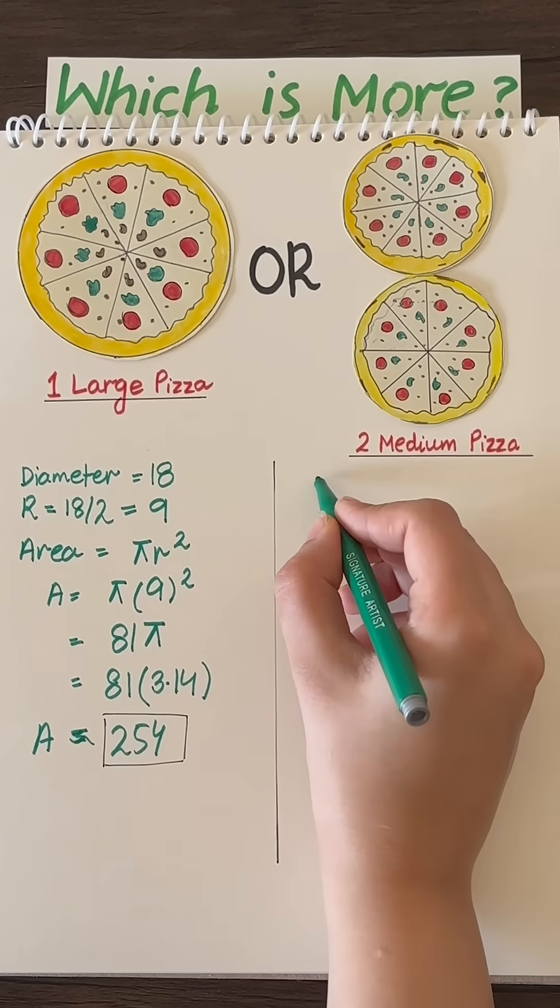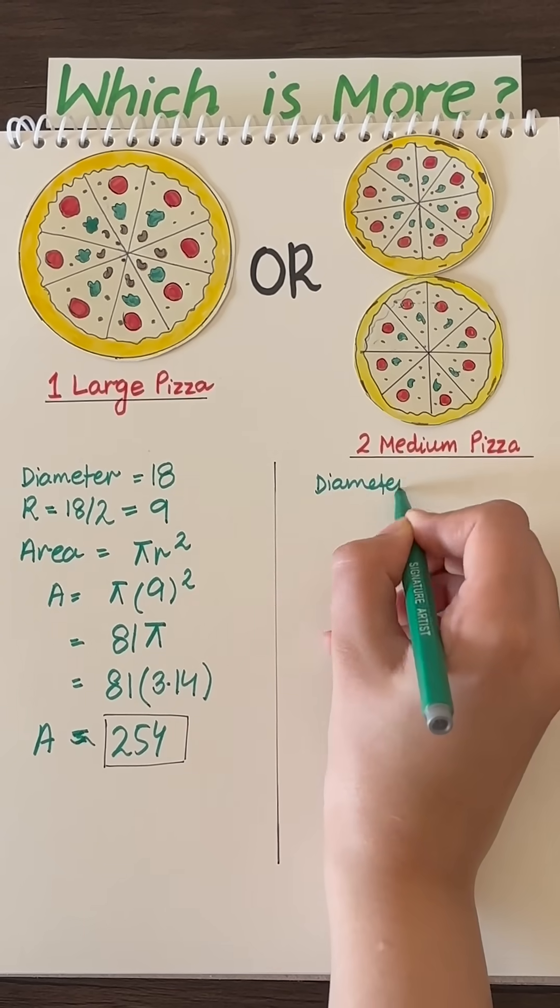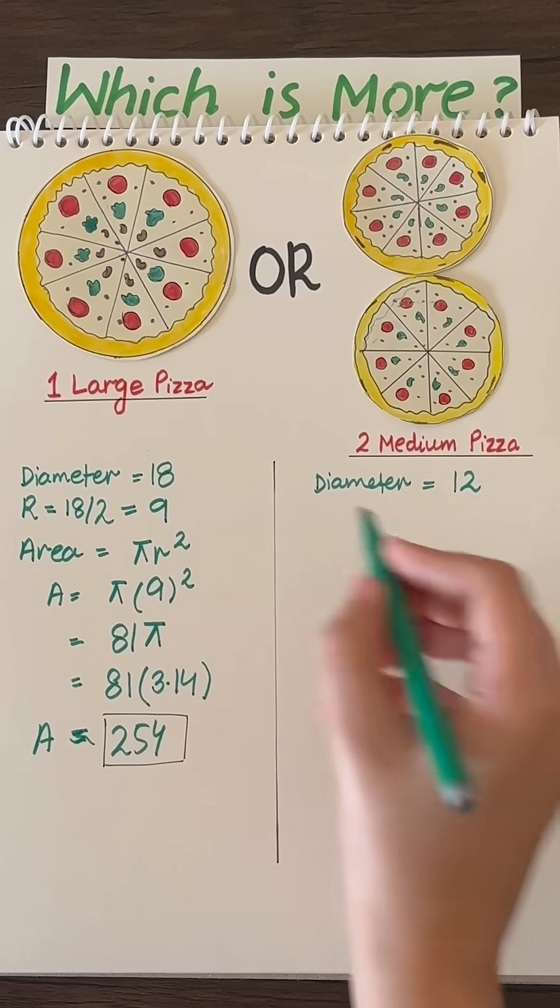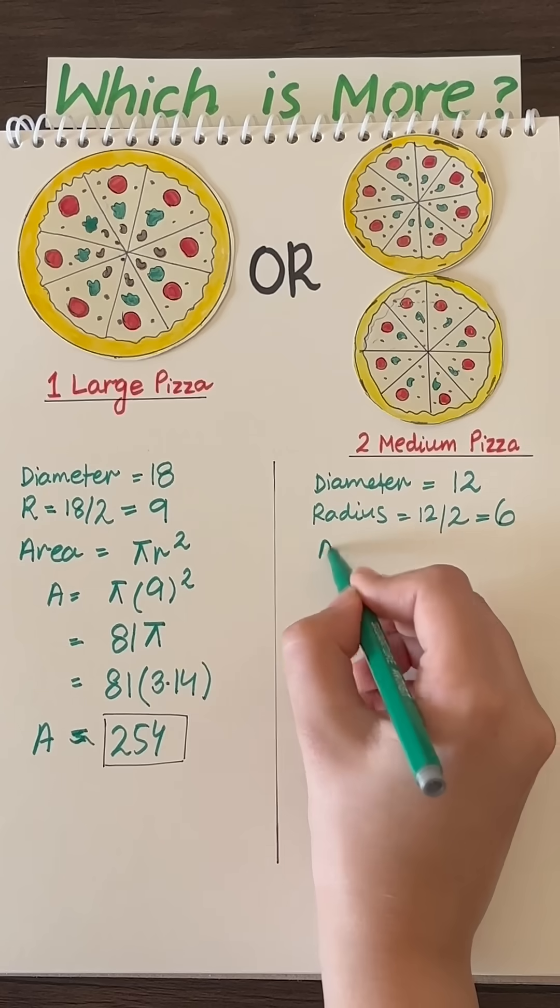Now let's move to the medium-sized pizza. A single medium-sized pizza has a diameter of 12. From this we find the radius, which will be 6.